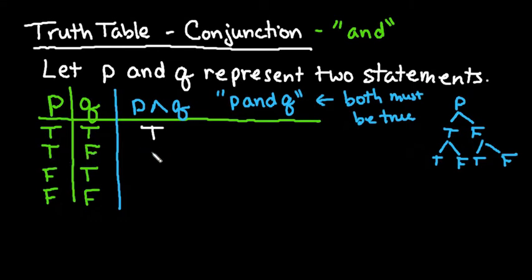Since not both of them are true, this would be a false statement. False and true would also be a false statement, and false and false would be a false statement. Because the only way that an AND statement can be true is if both of them have a truth value of true.